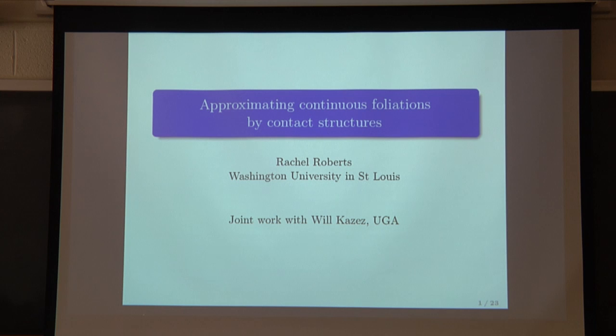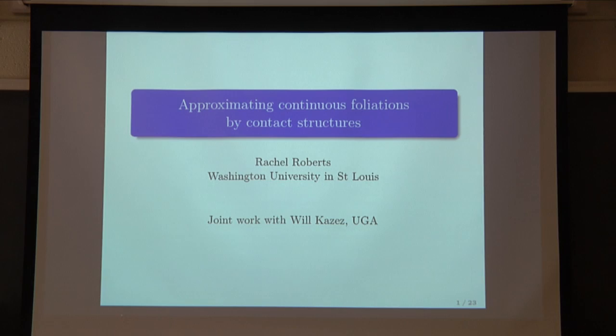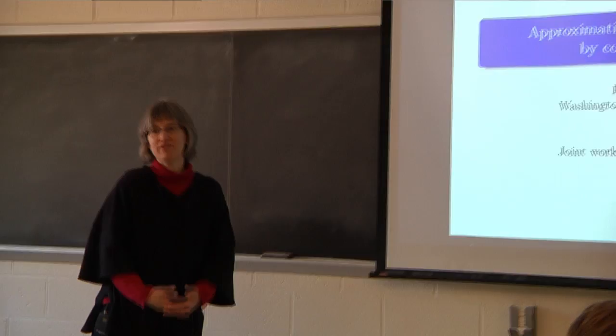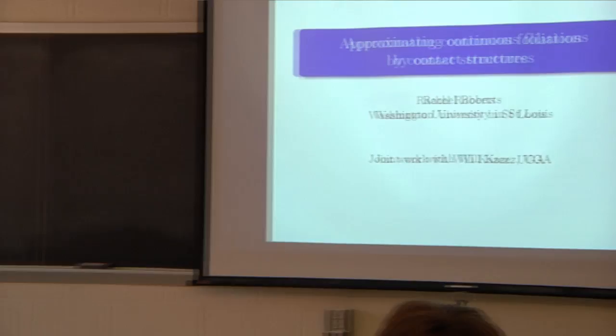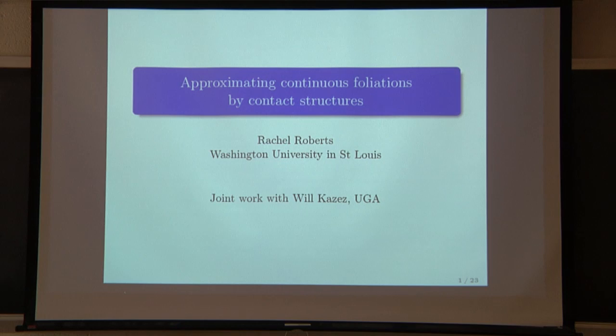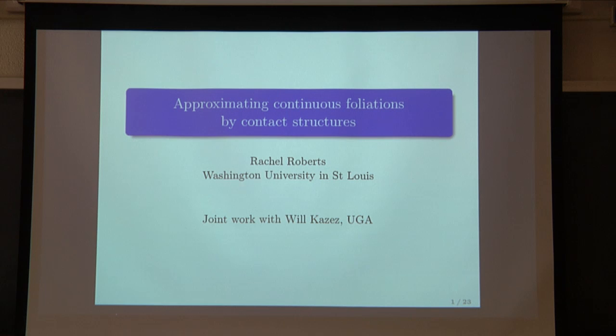Today I'm very pleased to have Rachel Roberts from Washington University, who will be telling us about how to approximate foliations by contact structures. My goal is to define the various terms that I use today, so please stop me if I've used a term so often I forget that it's not one of the standard ones. We're going to be talking about foliations and contact structures, and in particular getting to a result due to Eliashberg and Thurston, which says that if you have sufficiently nice foliations, you can approximate them by contact structures.